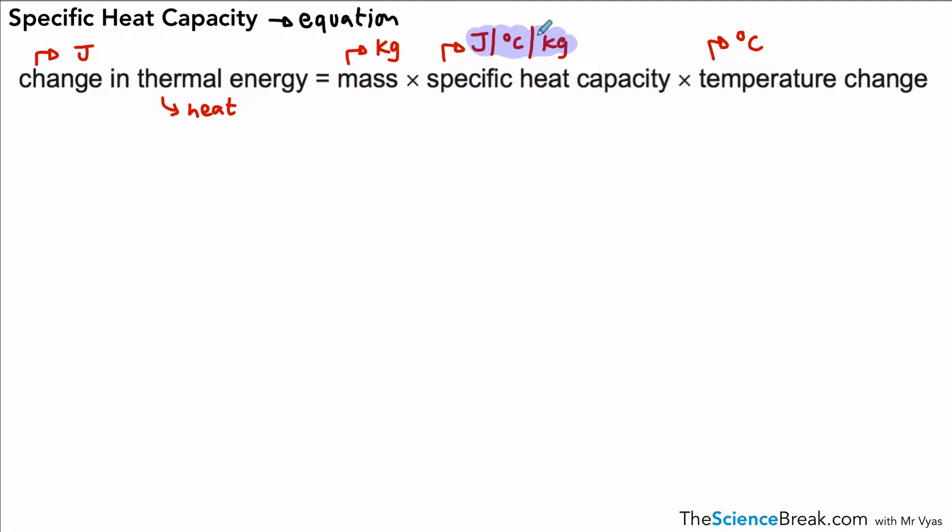So if you forget this unit here, it's quite easy to remember—it's joules per degree C per kilogram—by looking at the other units which are easier to remember. You might also see it in your exam or on the equation sheet like this, and it looks slightly more complicated, but it's literally the same thing.